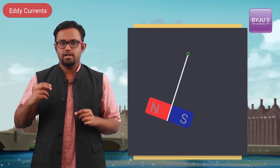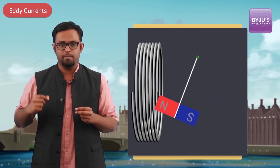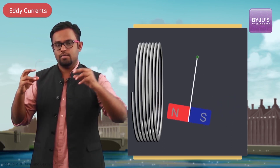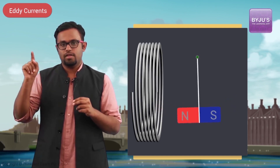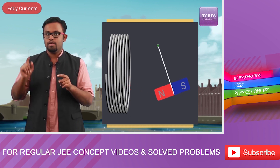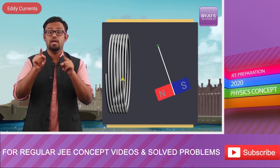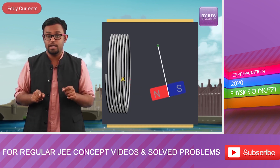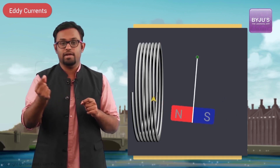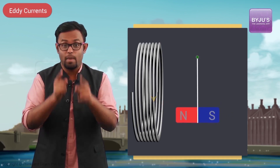Now if a metal coil is brought next to the oscillating magnet, as the magnet moves towards the coil, the flux associated with that coil would definitely change, because of which the coil would have a current that opposes the motion of the magnet. What you would expect is that the magnet starts damping and finally stops, because the coil is opposing its motion.